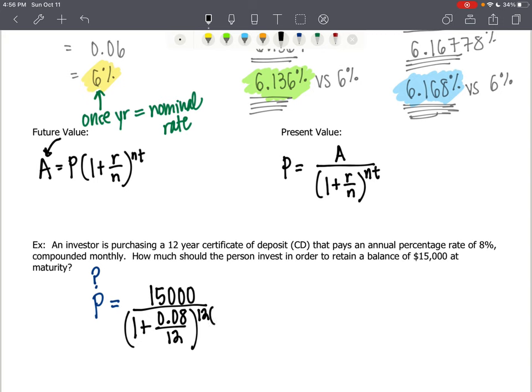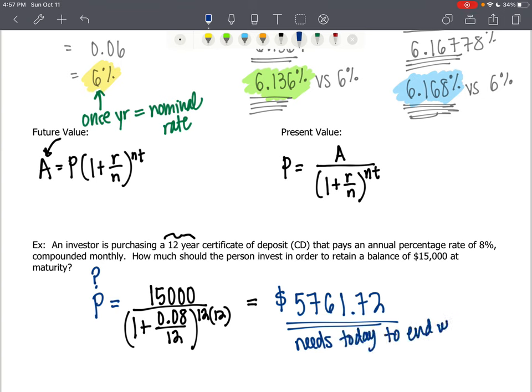The interest rate is 0.08 which is 8% compounded monthly would be divided by 12 and then that's raised to the 12 times 12 power. Why 12 times 12? 12 for monthly and then 12 for 12 years. When I put that into my calculator the present value drumroll press pause is $5,761.72. That's what he needs today to end up with $15,000 in 12 years.